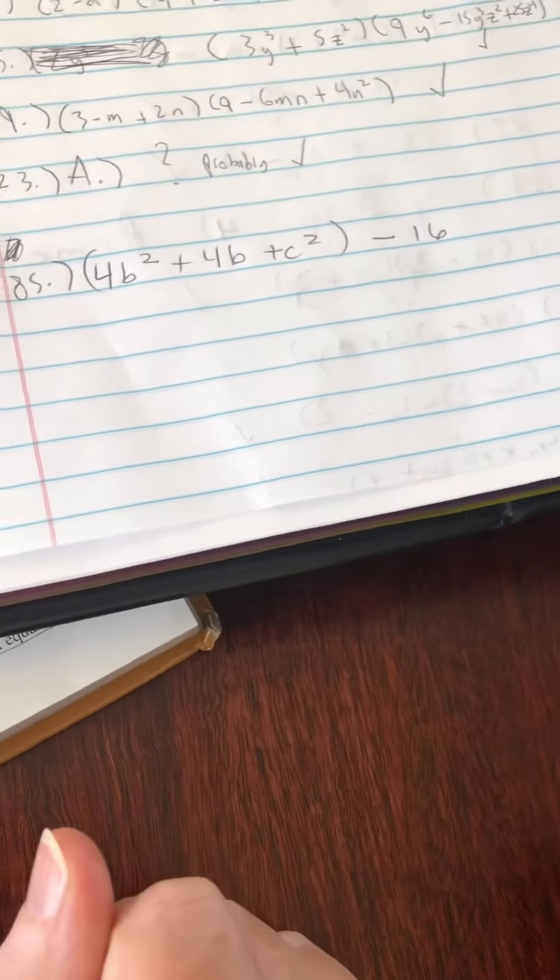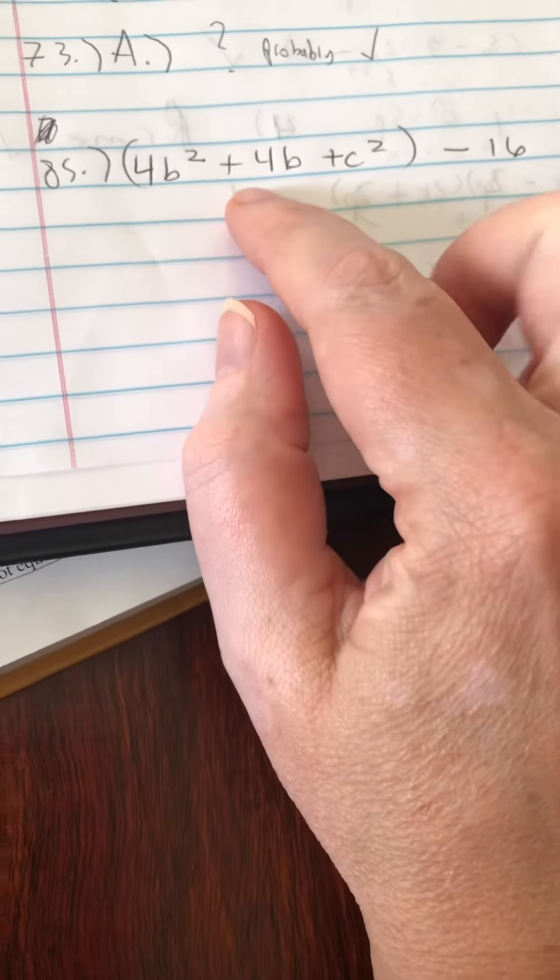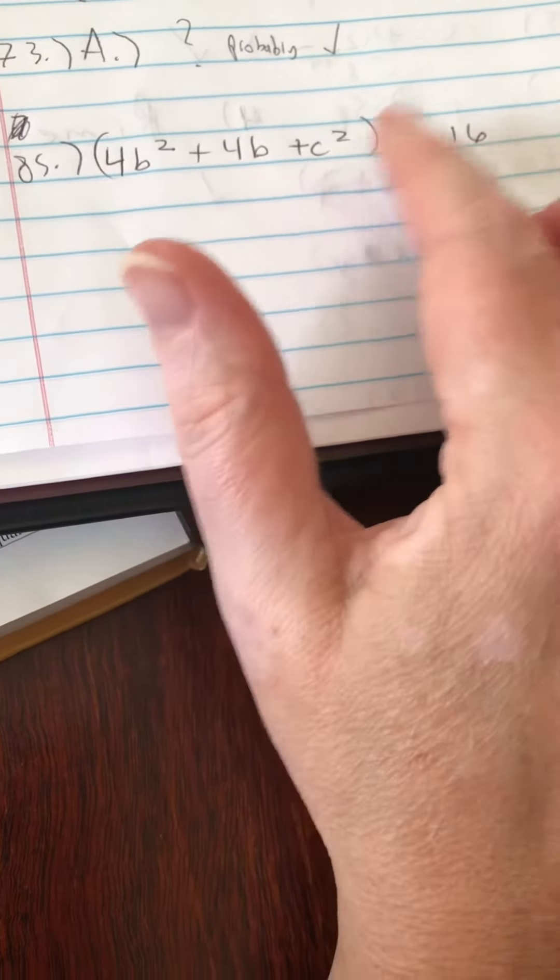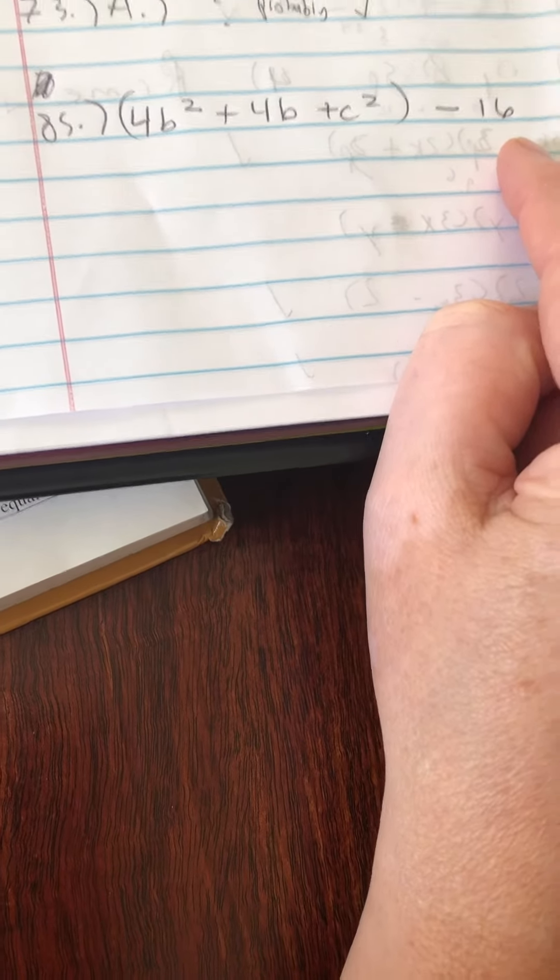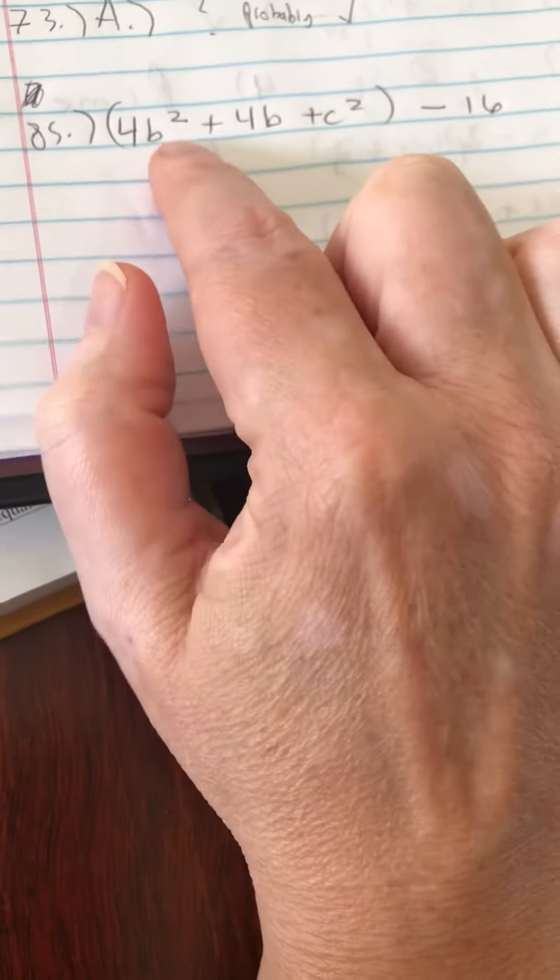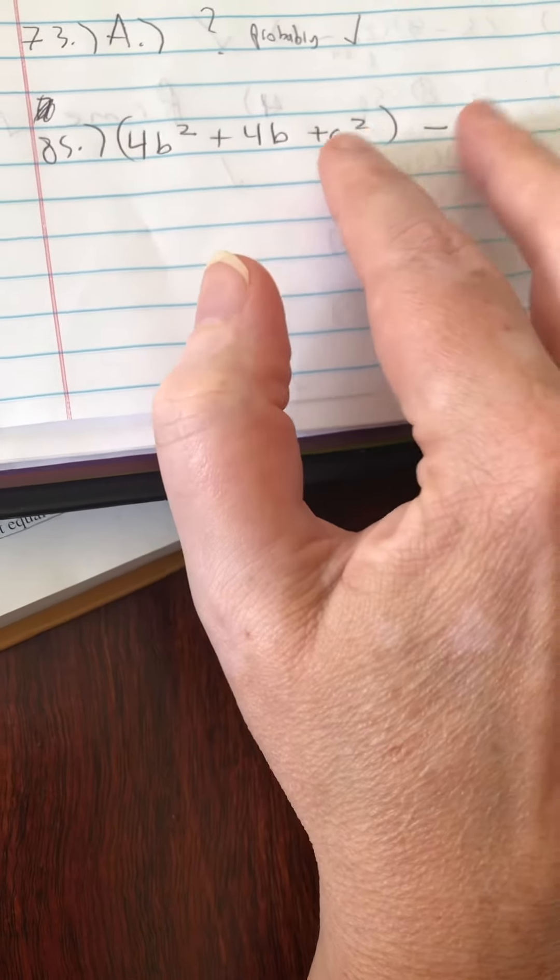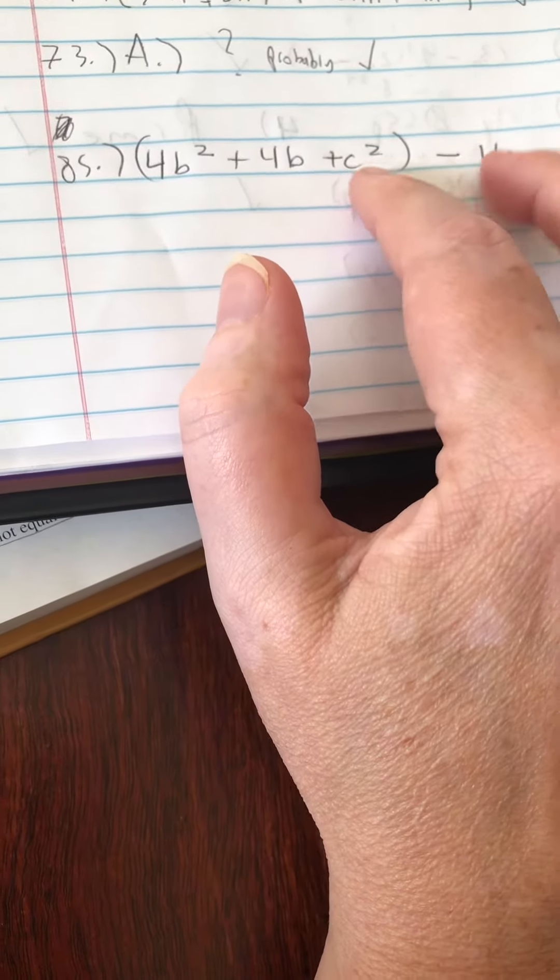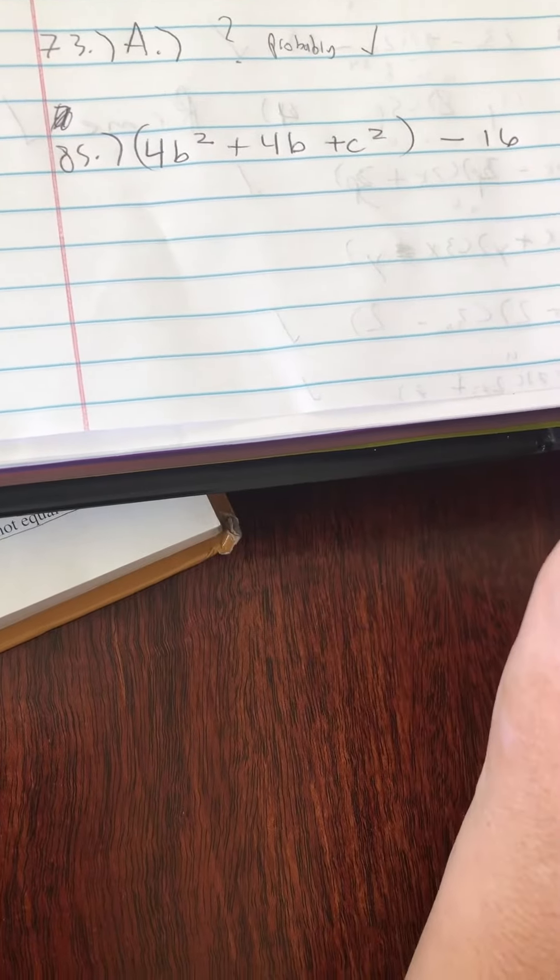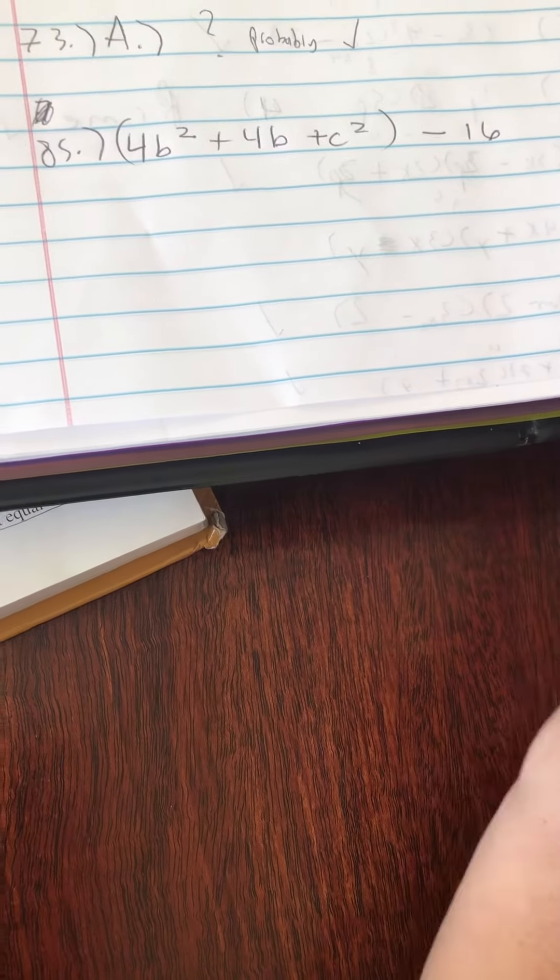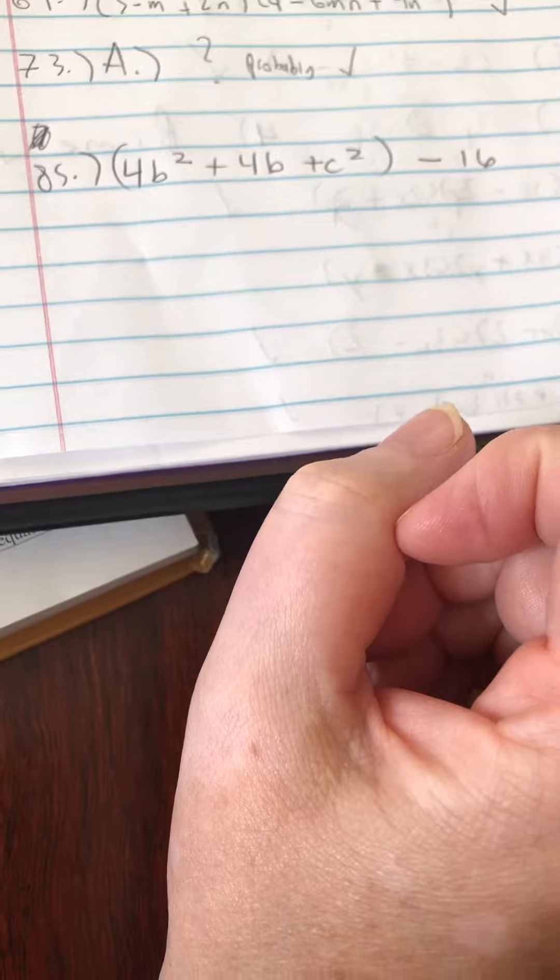Hello, happy Wednesday. So on number 85, if you'll notice this has four terms which we normally factor by grouping. Normally when we factor by grouping, we group the first two and factor out something in common, group the last two and factor out something in common. And if that won't work, we switch places and try again. Anyway, two and two will not work. Grouping two and two will not work on this one.